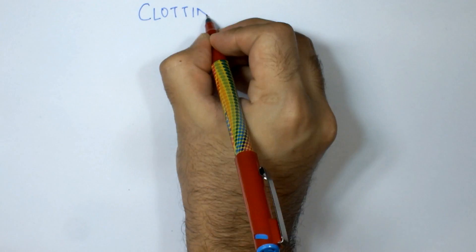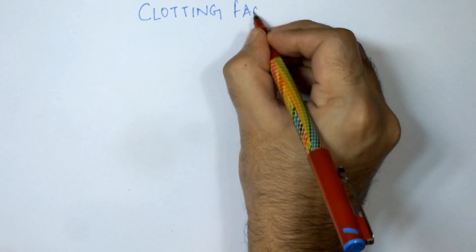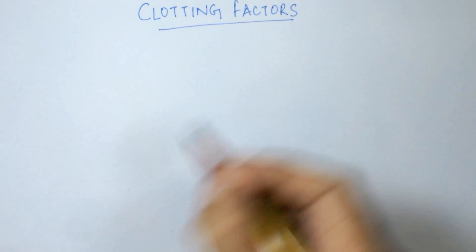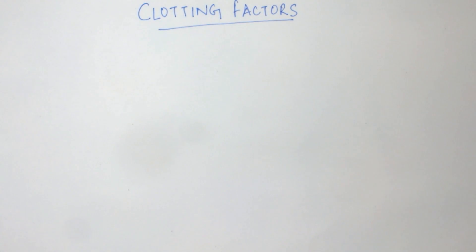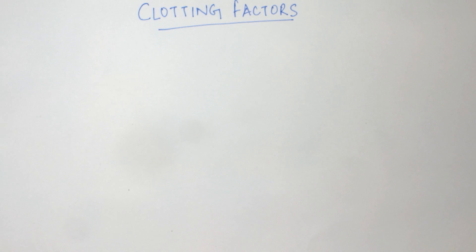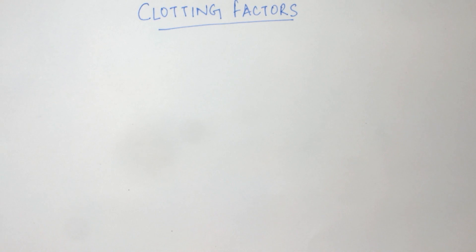In this video we will be studying the clotting factors. After watching this video, I will encourage you to watch the second part which describes the coagulation pathways. As you know, there are 13 clotting factors, numbered 1 to 13, but only 12 are actually present because factor number 6 is missing — we will discuss that later.